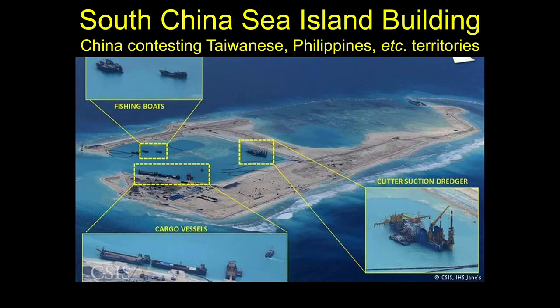China has been going to areas that are essentially tiny sand spits or submerged coral reefs and actively pumping sand — first destroying reefs, then infilling these areas and creating islands, then putting military bases on them. The ostensible reason is fishing activity, but that's really a front.